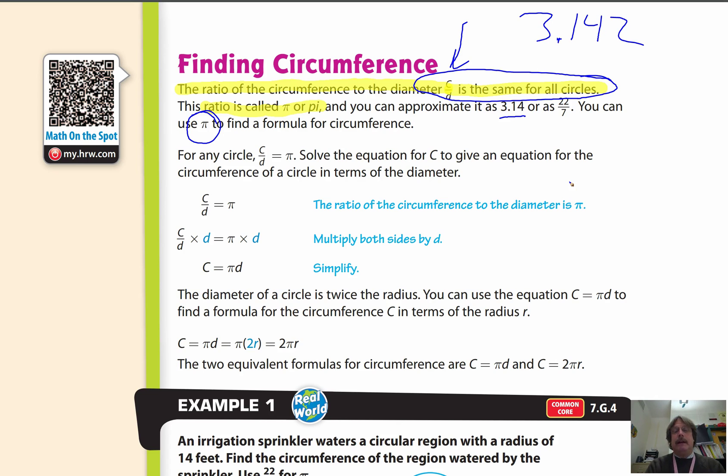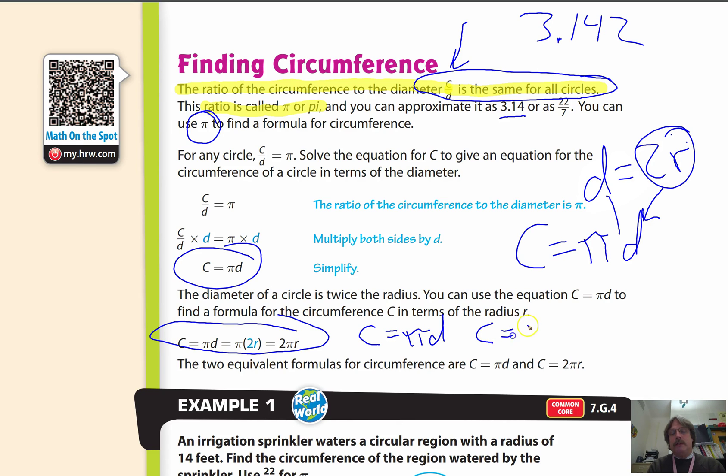So what they're saying here is that the way we typically write our formula is this way here, where circumference equals pi D, and since we had said that the diameter is equal to 2 times the radius, we can substitute that, this in here, C equals pi D, we can substitute this right in for that. They've substituted the 2R, and then we rewrite it with the constant up front, 2 pi R. So we have two equations that we could use.